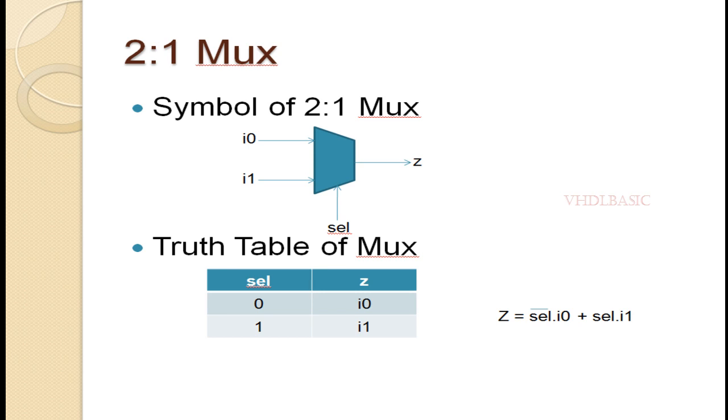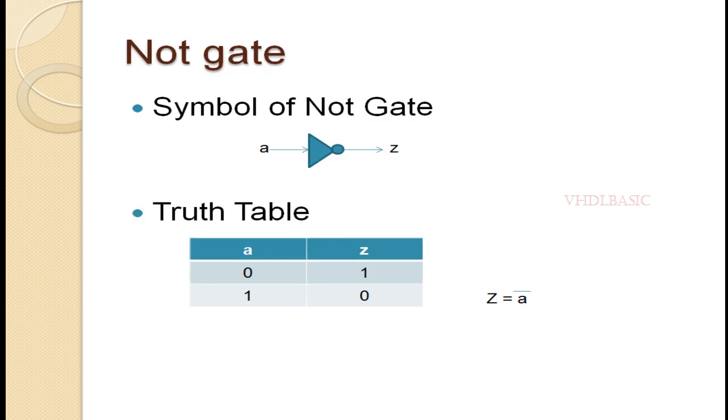This is a NOT gate. This is the symbol of a NOT gate. The input is a and the output is z. If you see the truth table, if a equals 0 then z will be 1, if a equals 1 then z will be 0. The expression is z equals a bar.